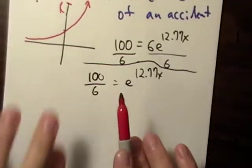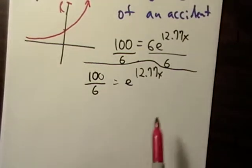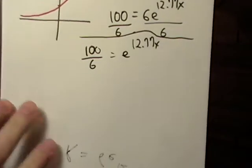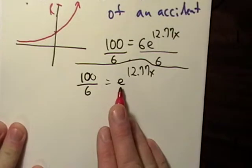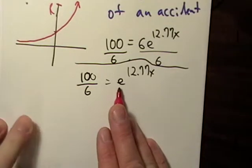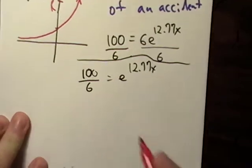Well, now this looks a lot like one of our other problems that we've just did. So we're just going to take the natural log of both sides. Notice how we have an E right here. That's kind of a tip-off that we're going to use a natural log.